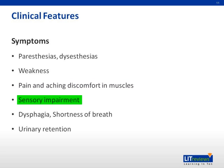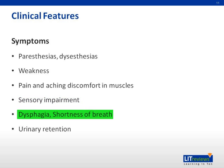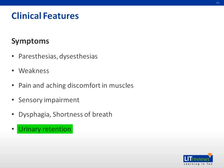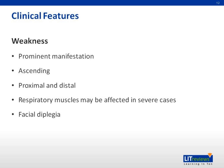Sensory deficits are usually mild. Bulbar muscle weakness results in dysphagia and dysphonia. Respiratory muscle involvement can present with shortness of breath. Transient bladder dysfunction can occur in severe cases. Lower limb weakness occurs and progresses over days to weeks, followed by upper limb weakness — hence the term ascending weakness.